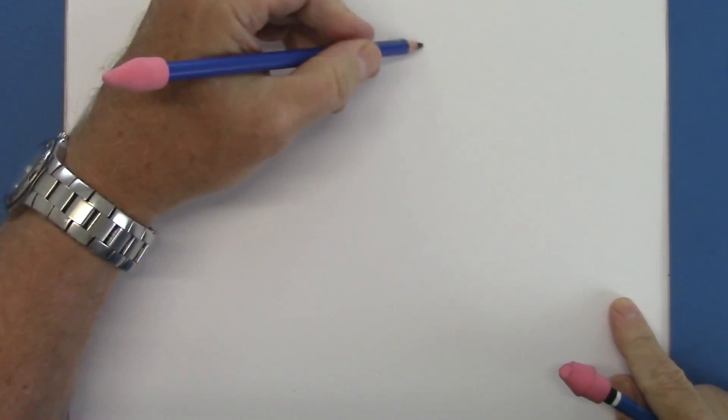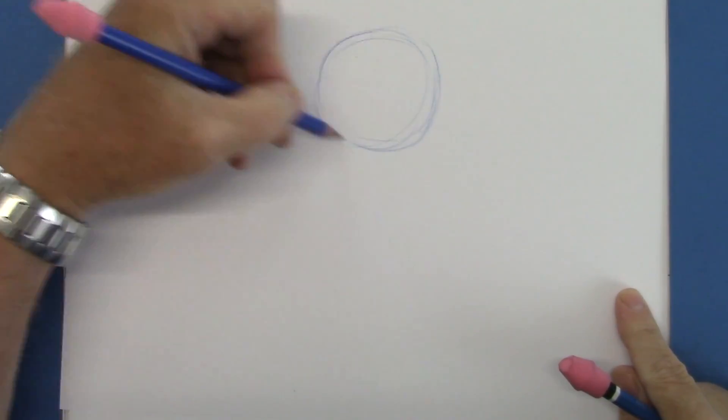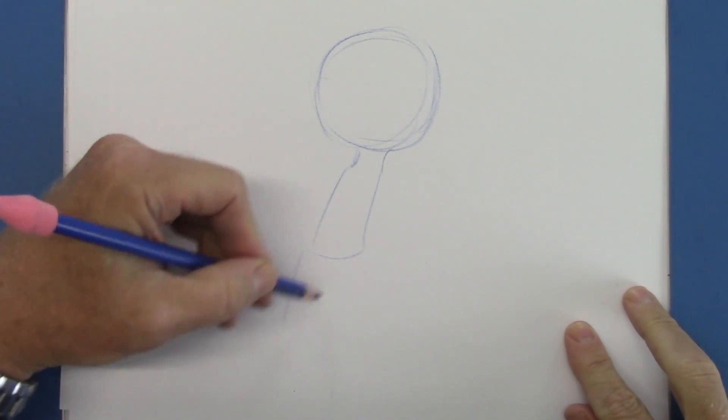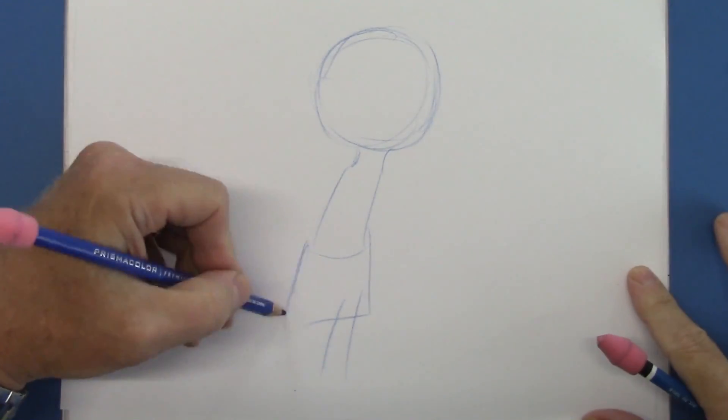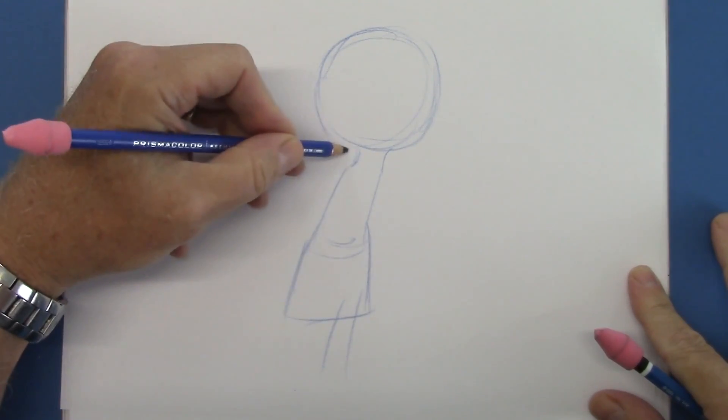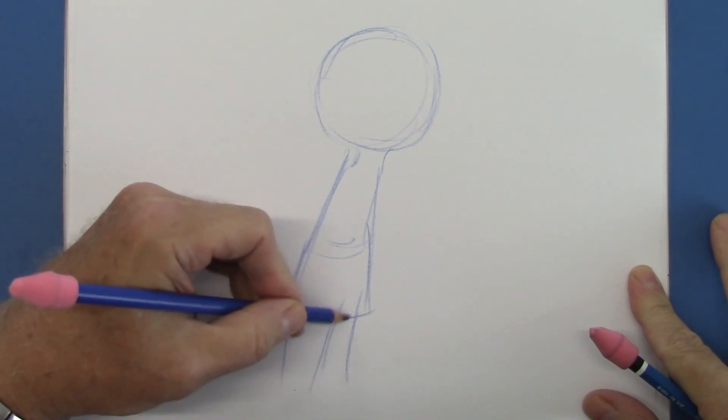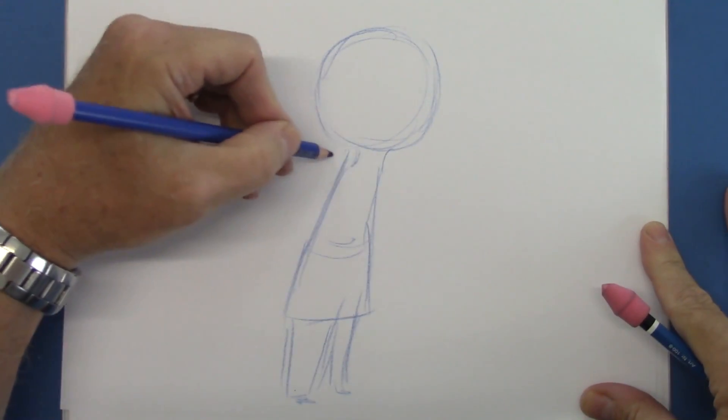So actually maybe we should start with blue because I like to kind of lay things out very lightly and rough first before I commit myself to finishing them. It just gives me more room to maneuver. Let me see if this is going to have enough room here. Yes. Alright.